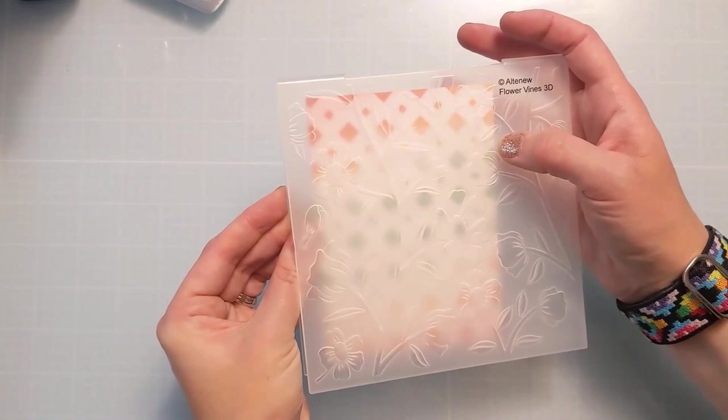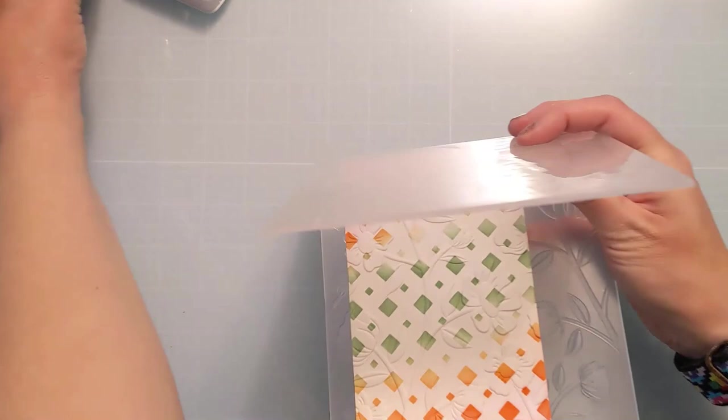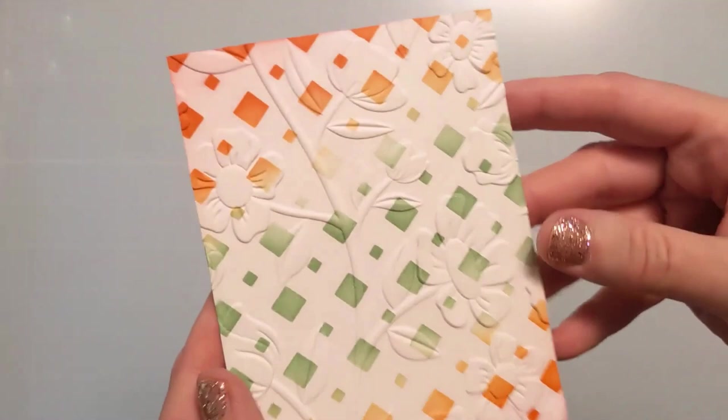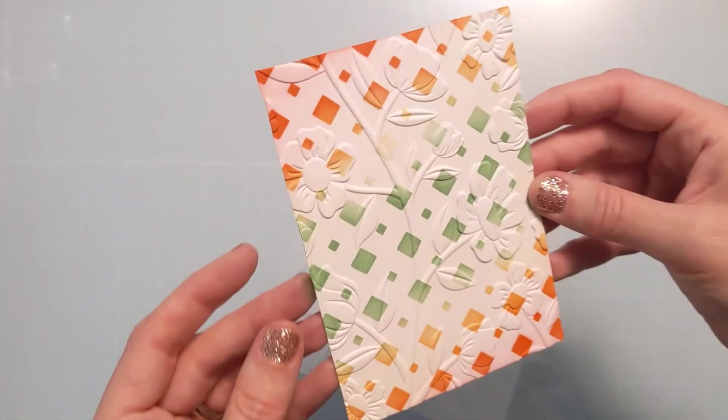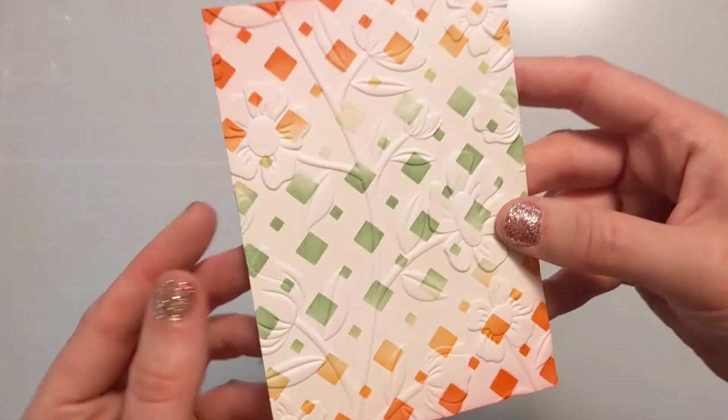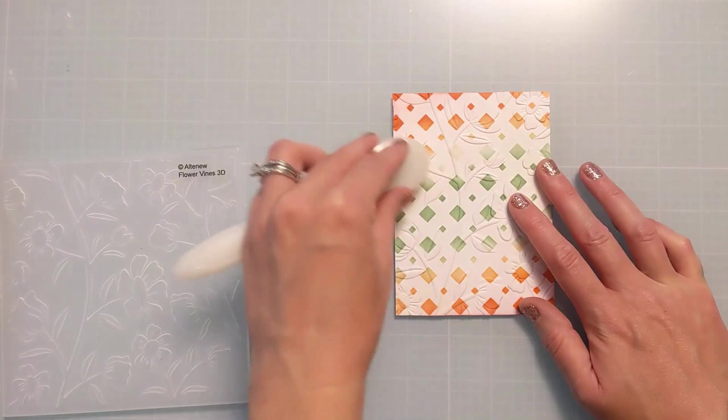And now I'm going to load this up in the embossing folder and get it nice and straight and then I'm going to run it through off screen through my Spellbinders Platinum 6 embossing machine and look at this awesome design once I get stuff out of the way here. It's so cool. I think it turned out so awesome. You can really see it even on just plain white. So that's what I love about these embossing folders. They're just such a dramatic effect. You can see how much that would show and even the debossing side is really cool too. So you get a lot of versatility with these.